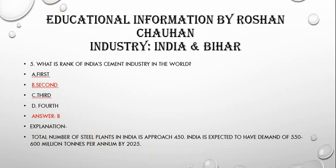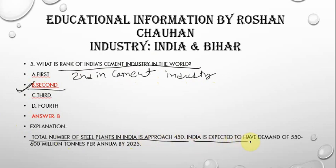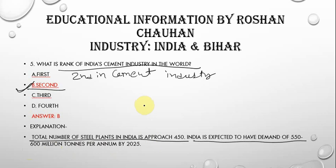The next question is: what is the rank of India's cement industry in the world? The correct answer is 2nd. The total number of steel plants in India is approximately 450. India is expected to have a demand of 550 to 600 million tons per annum by 2025.